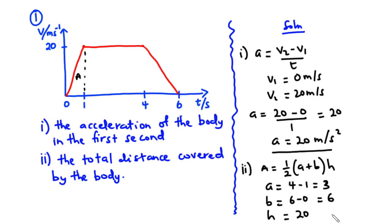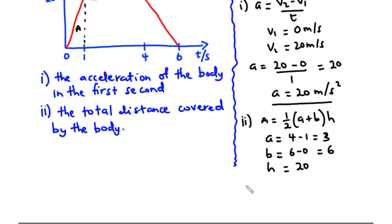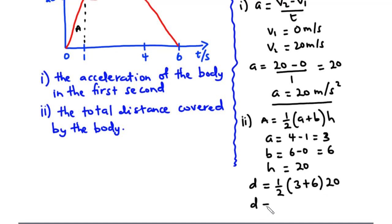The total distance covered d is equal to half times (a plus b) times h, that is half times (3 plus 6) times 20. When you simplify, you get 90 meters. So the total distance covered by the body is 90 meters. Now let's move on and solve the second question.